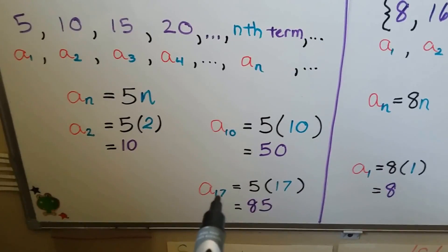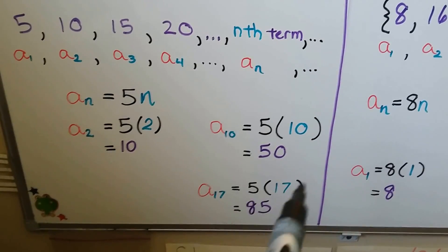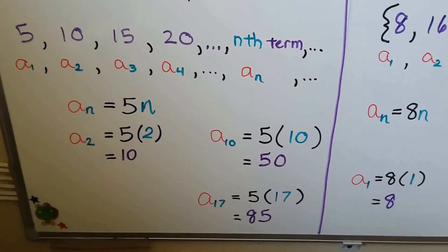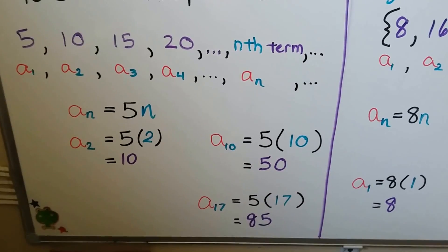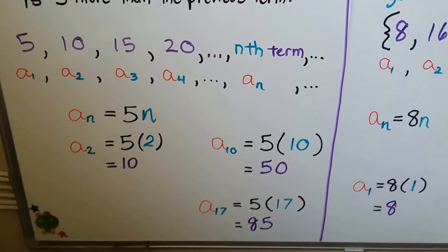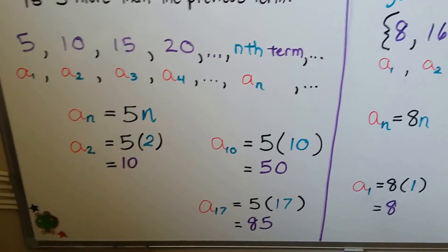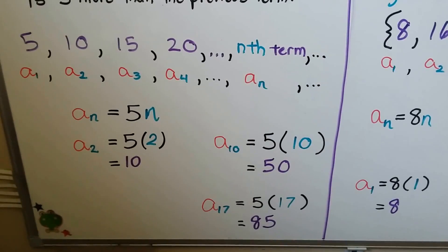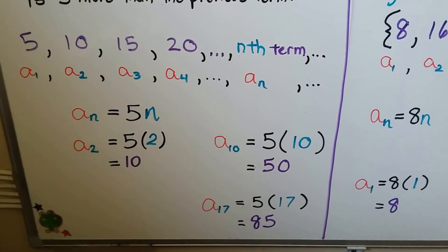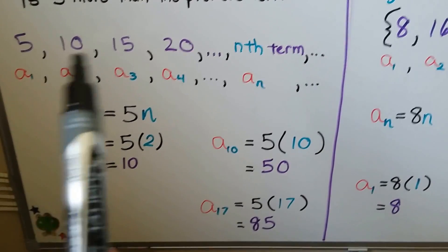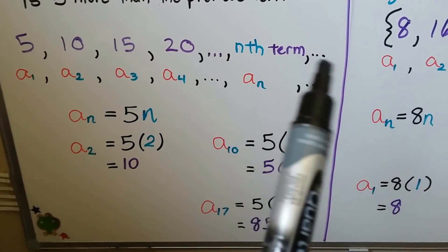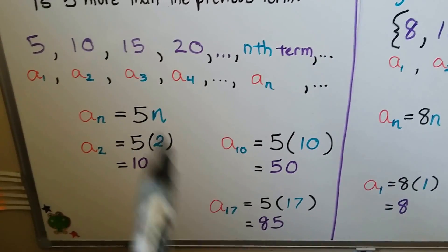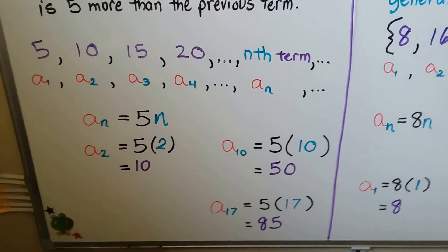We could find the seventeenth term — that would be five times seventeen, that would be eighty-five. We could find the ninety-ninth term, we could find the nine hundred and ninety-ninth term. All we have to do is multiply by five. It saves us the trouble of having to write out every single one and adding five to each one all the way up to the nine hundred and ninety-ninth term.